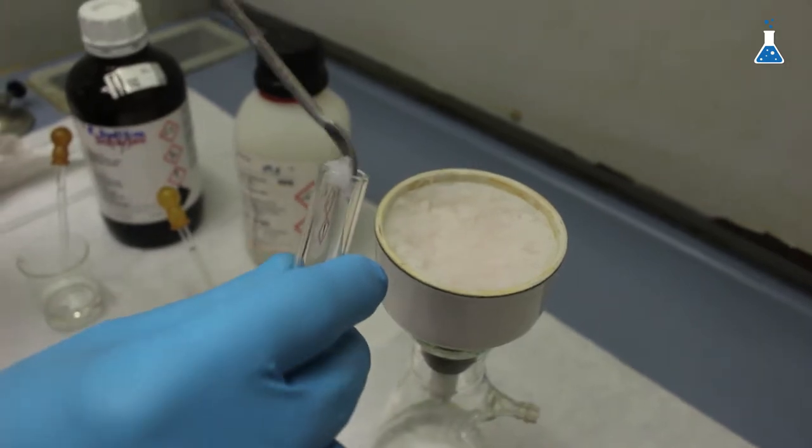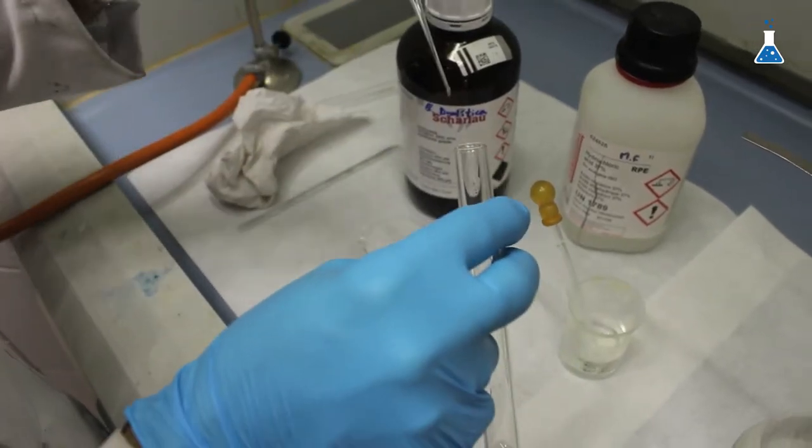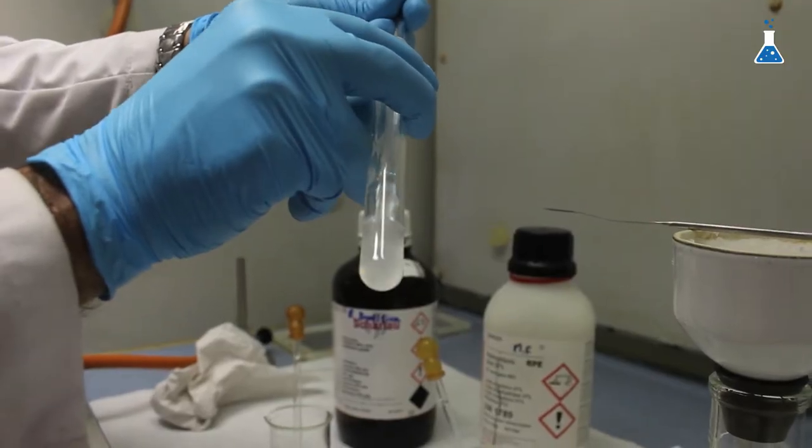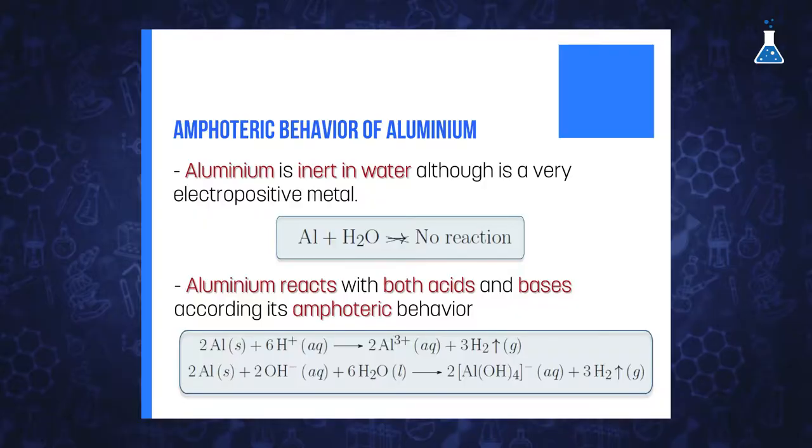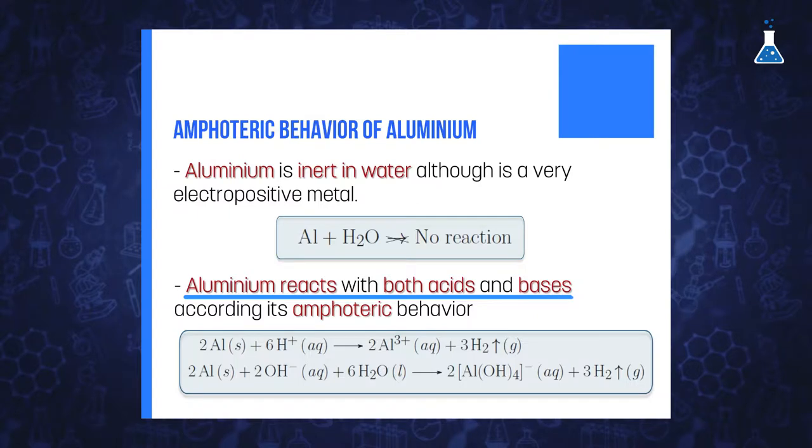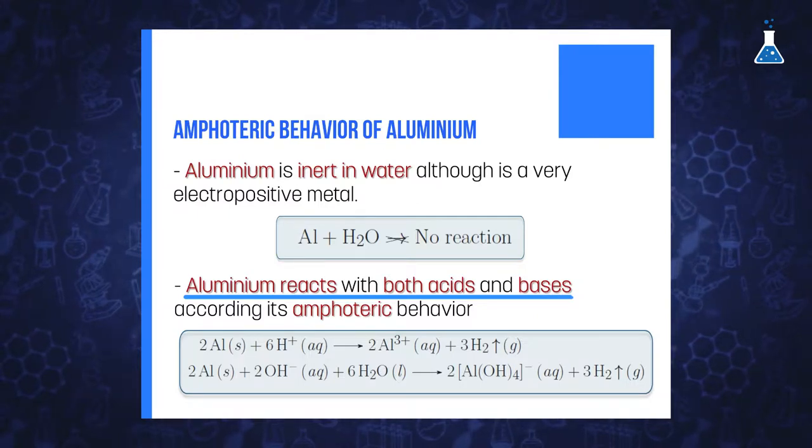Let's now check what happened in the second test tube with a diluted solution of sodium hydroxide. Again, the solid dissolves showing the acidic behavior of the solid for this reaction. So, aluminum oxide reacts with both acid and bases, which indicates an amphoteric behavior of this compound.